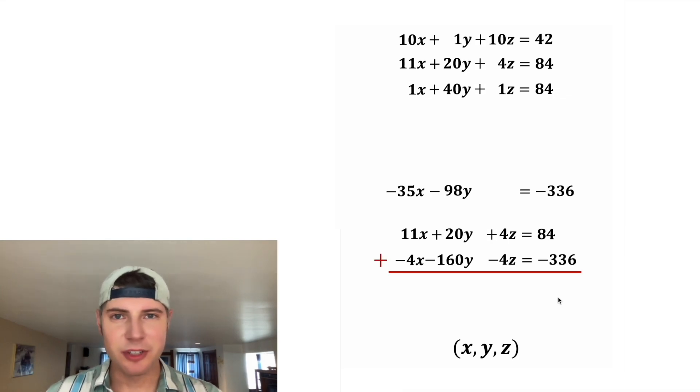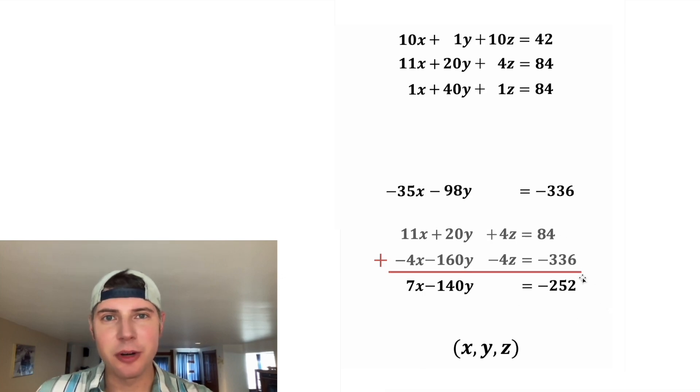And let's add these two rows together. 11x minus 4x is 7x. 20y minus 160y is negative 140y. 4z minus 4z goes away. And 84 minus 336 is negative 252. We've now gotten rid of the z out of these two equations.